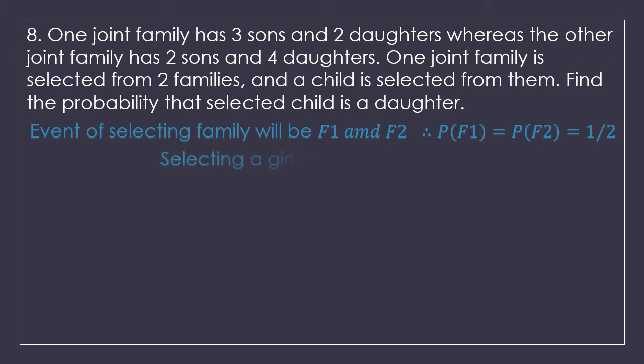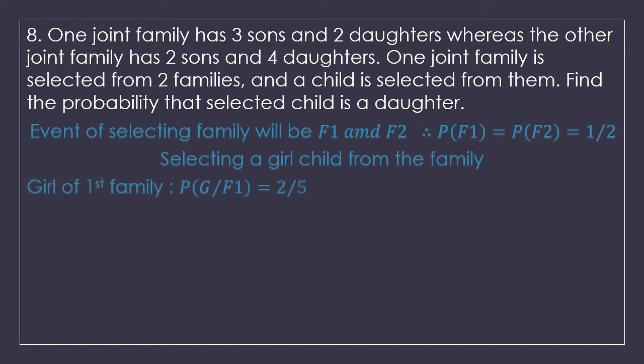I am going to find the probability of selecting a girl child from each family as a conditional probability. Why? Because I am calculating the probability of selecting a girl given it is from a specific family. P(G given F1): first family has 5 total children and 2 are daughters, so that is 2 upon 5. P(G given F2): second family has 6 children and 4 are daughters, so that is 4 upon 6.